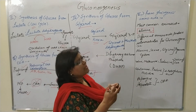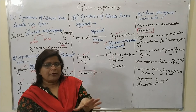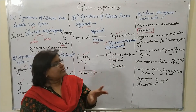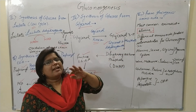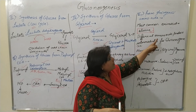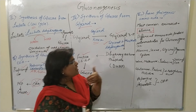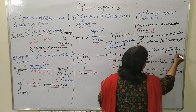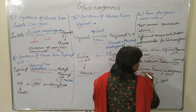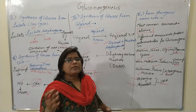The fifth source is glucogenic amino acids. The most common amino acid involved is alanine. Different amino acids produce different intermediates: alanine, serine, glycine, and cysteine generate pyruvate; valine, methionine, and isoleucine are converted into succinyl CoA; glutamine, proline, and histidine are converted into alpha-ketoglutaric acid; asparagine and aspartate are converted into oxaloacetic acid.